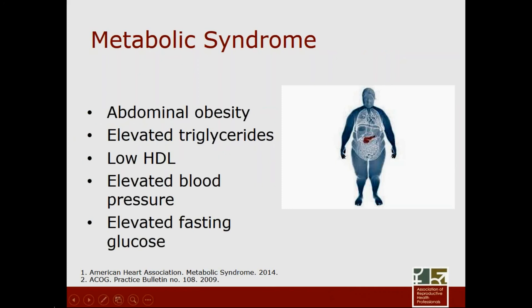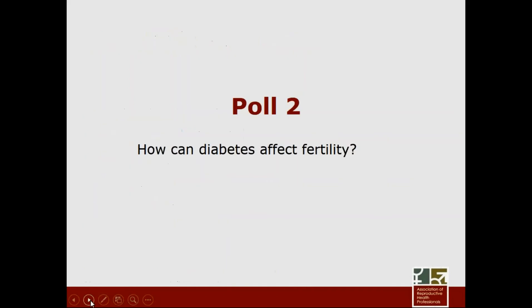The metabolic syndrome is in many ways a precursor to type 2 diabetes. It is a syndrome defined by a number of factors: abdominal obesity, elevated triglycerides, low HDL, elevated blood pressure, and elevated fasting glucose. Abdominal obesity is really the driver of all of this, and patients who reduce their abdominal obesity will see a reduction in risk across all these factors. All of these come together to increase risk of cardiovascular disease, so recognizing and reversing the course early on is definitely useful to patients.